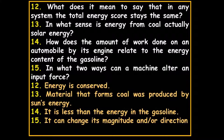What does it mean to say that in any system the total energy stays the same? That's based on the fact that energy is neither created nor destroyed — it can change and transform, but you can account for it. That's the law of conservation of energy. In what sense is energy from coal actually solar energy? Coal comes from terrestrial plants that died millions of years ago, were covered by dirt, and through pressure, time, and heat were transformed to coal. The plants originally absorbed energy from the sun through photosynthesis.